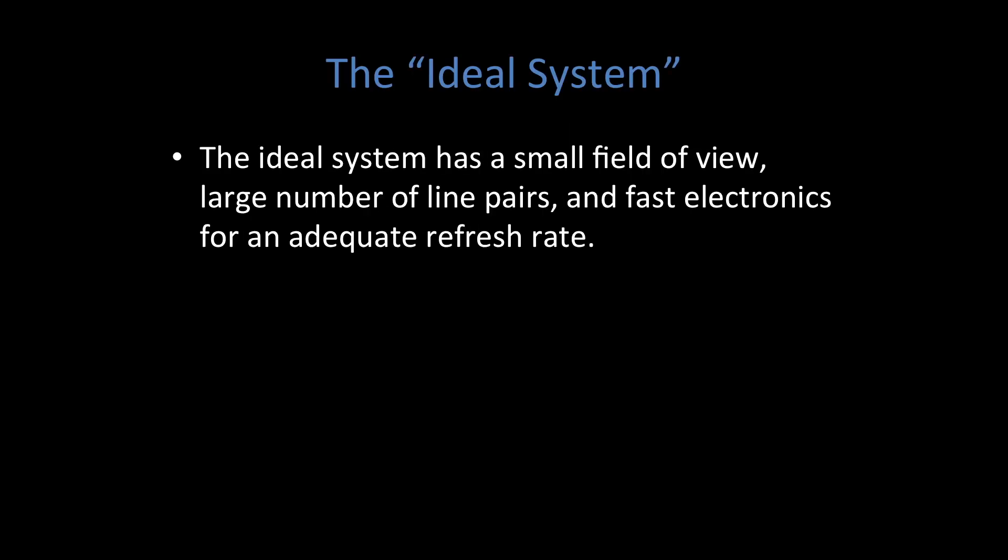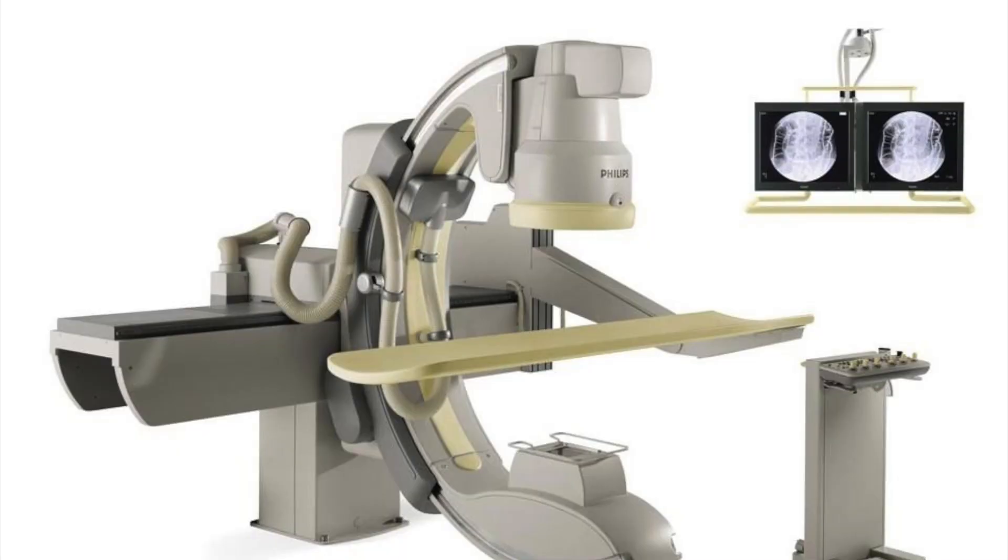Finally, I wanted to talk about the ideal system. The ideal system in theory would have a very small field of view, a large number of line pairs — improving your resolution — and fast electronics, which means an adequate refresh rate. Remember, this system is used for fluoroscopy, therefore we want to image in real time. We do want high resolution but we cannot limit our frames per second in order to achieve a super high resolution.